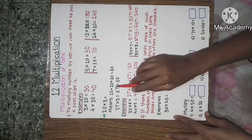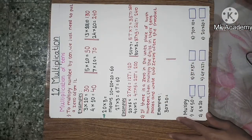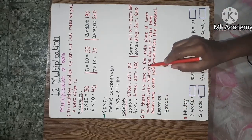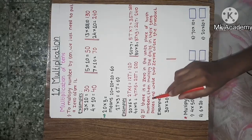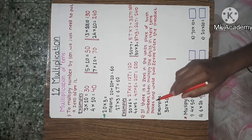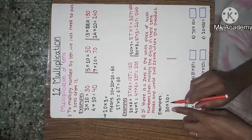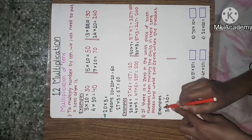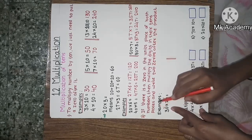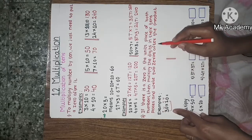This addition method is very lengthy, so we do multiplication — it is very fast and simple. Now the second property: if there is a 0 in the units place of both numbers, then multiply the digits in their tens places and write two 0s after the product.